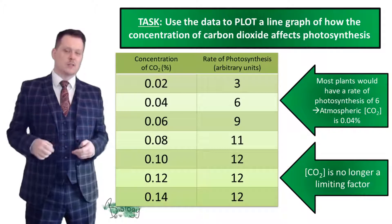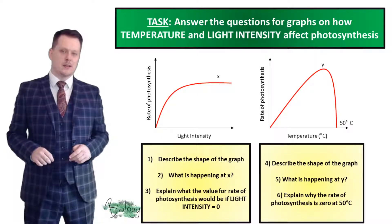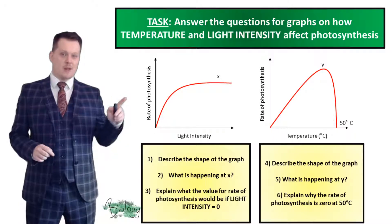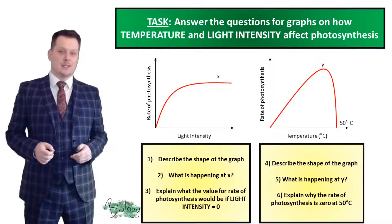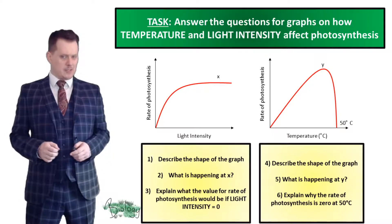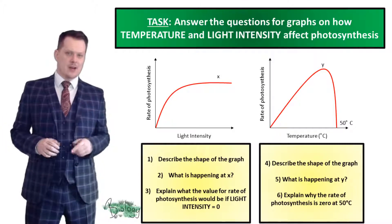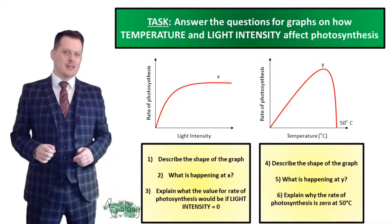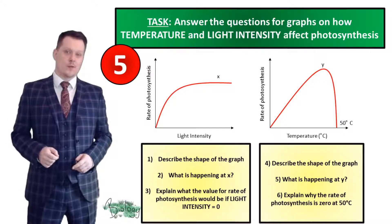Now we're going to look at some other questions. Look at two graphs and answer three questions about each one: describe the shape of each graph; explain what is happening at the marked point (x or y); and for the light intensity graph, explain what the rate of photosynthesis would be if light intensity were zero; and for the temperature graph, explain why the rate of photosynthesis is zero above 50°C.